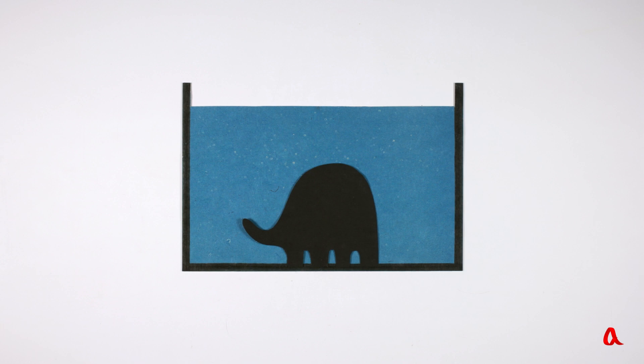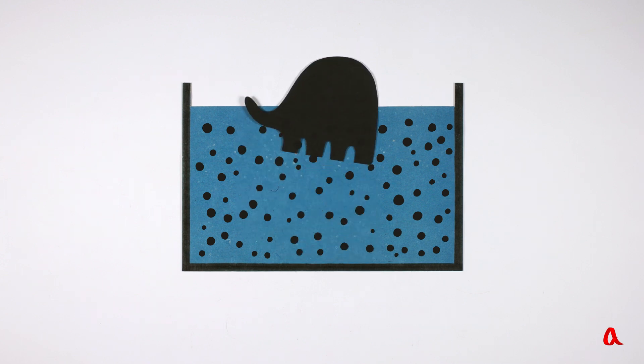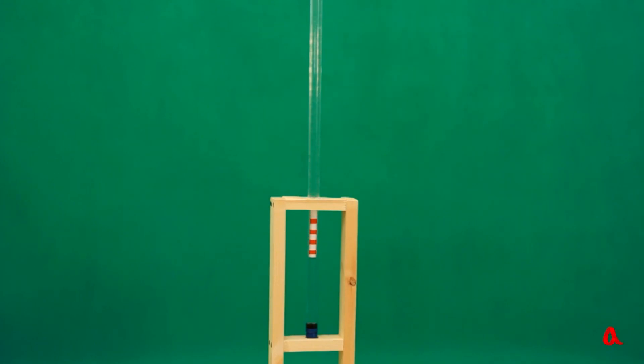Should we try to pour some lead shot into the water, its average density will increase, so an object which had sunk in it may surface. Let's put an object with a density slightly higher than that of water into the tube. Then we pour some lead shot through a funnel and our submarine does surface. But it sinks as soon as we stop pouring the lead shot.